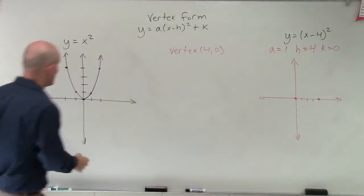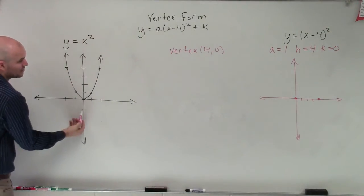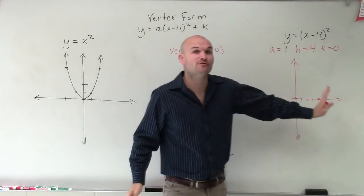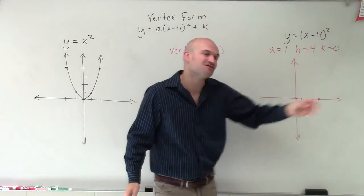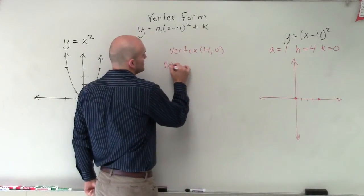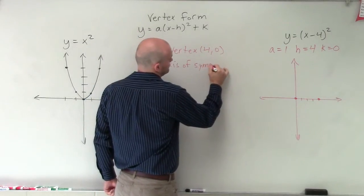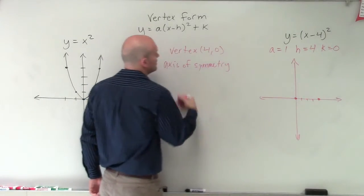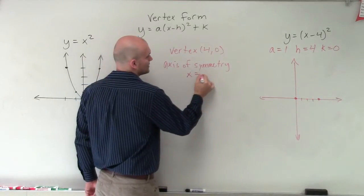Now, also, notice that the axis of symmetry, remember, has to go through the vertex. So if I just shifted over my vertex 4 units, that means I have to shift over my axis of symmetry 4 units. So the axis of symmetry is now going to be x equals 4.